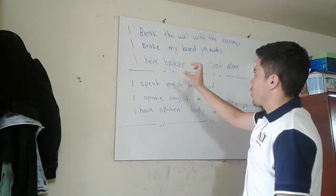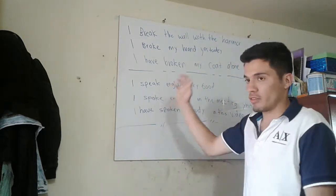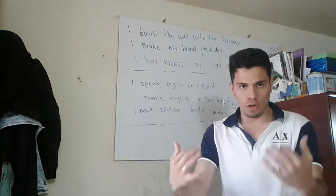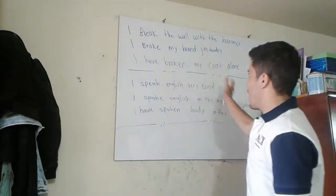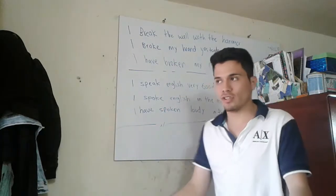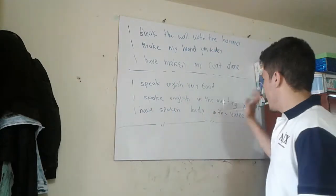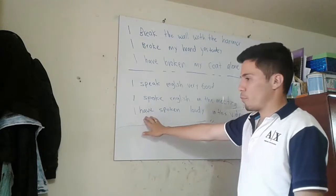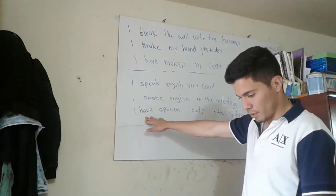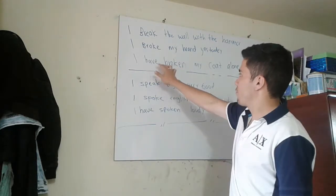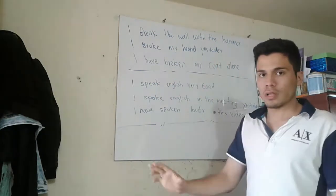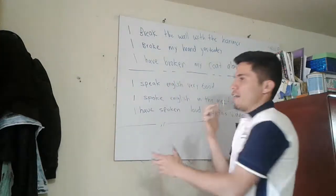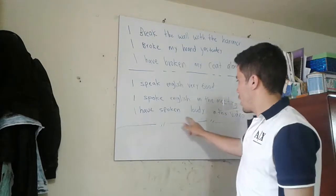I break the wall with the hammer. I speak English very good — in the present. The past is: I broke my hands yesterday. I spoke English in the meeting yesterday. And for the past participle: I have broken my coat alone. I have spoken in the past participle.